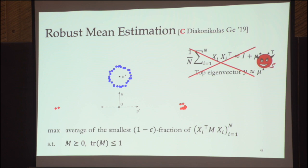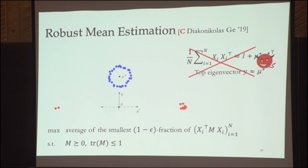One subtlety: the guarantee holds when you're sufficiently far from μ*. You run this iteratively — log n times — moving closer by a constant factor each time. After solving the SDP, the value of the SDP tells you whether you're close enough to stop. When you're close enough, you stop.